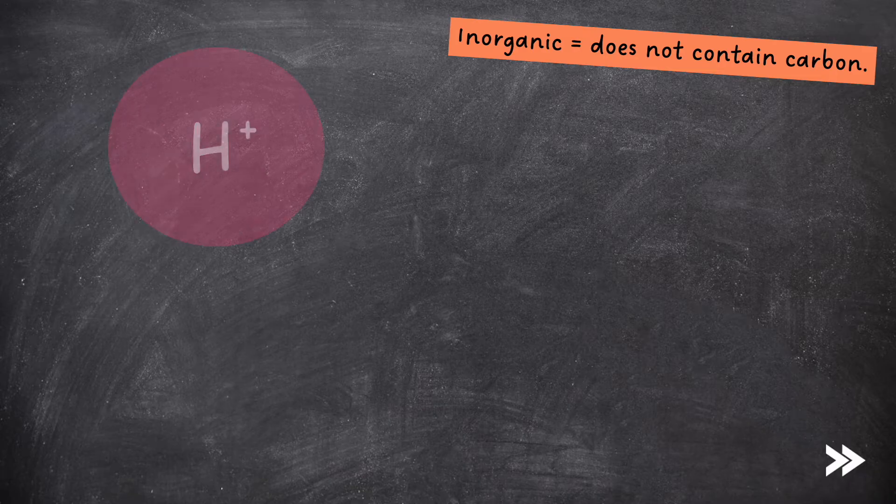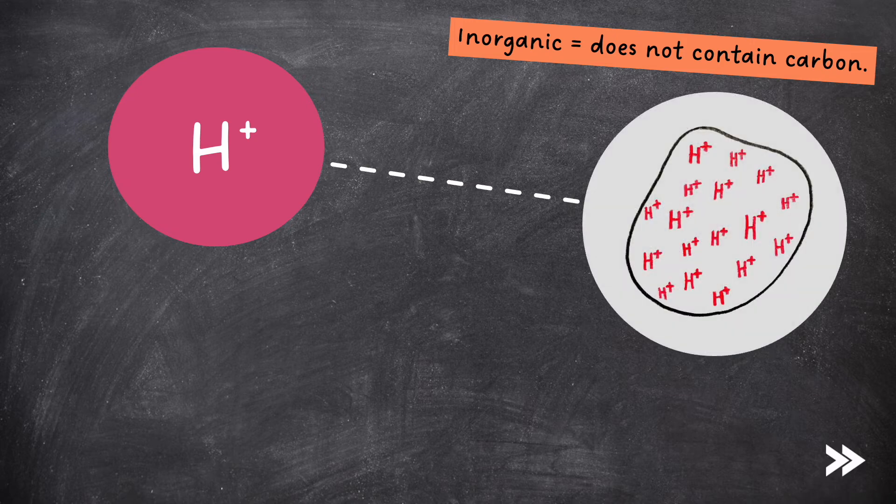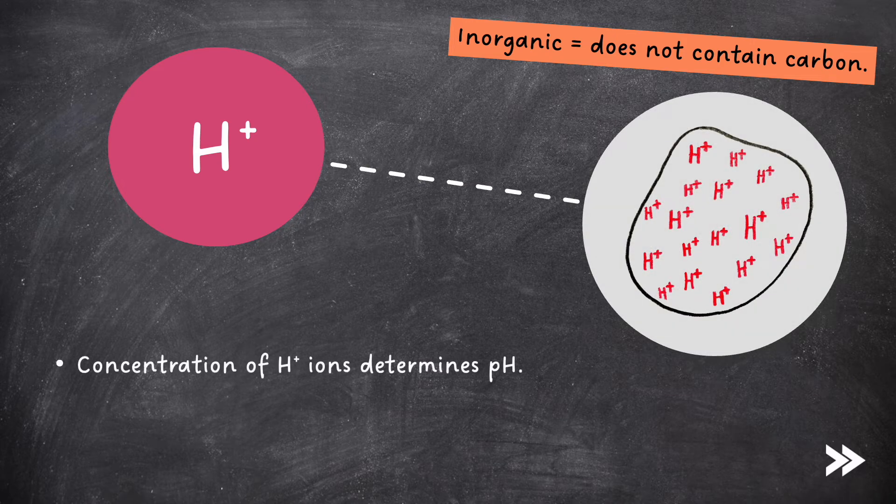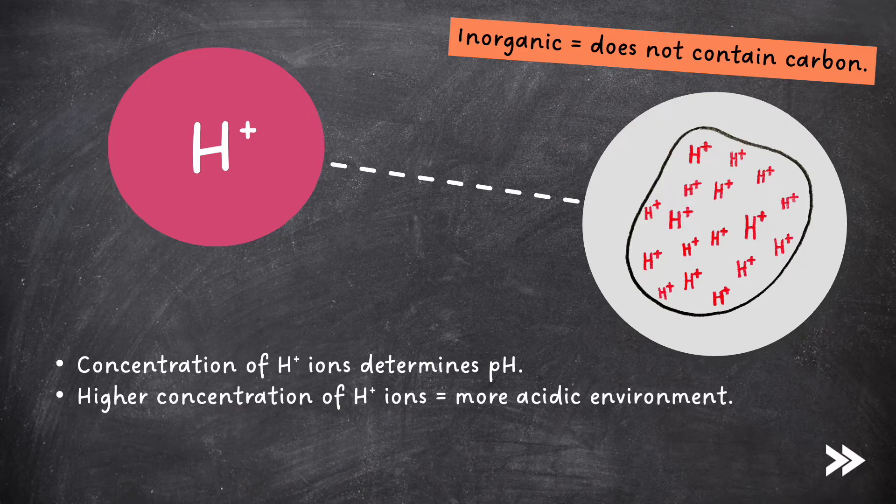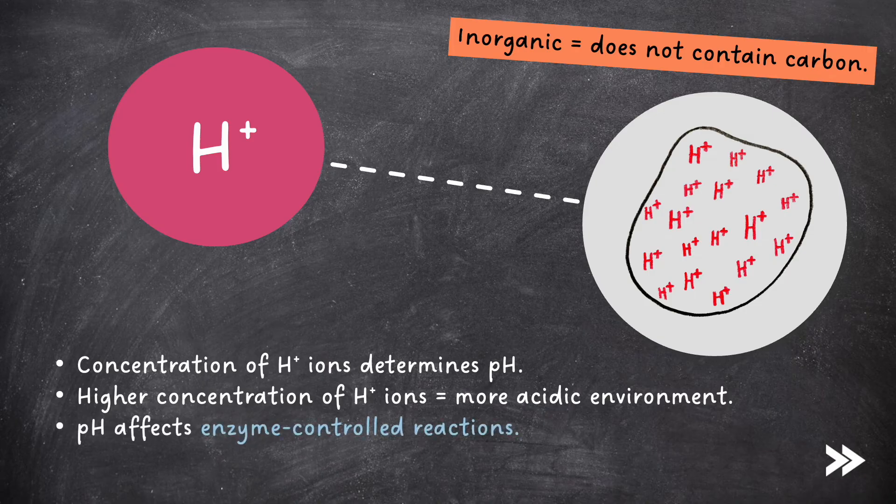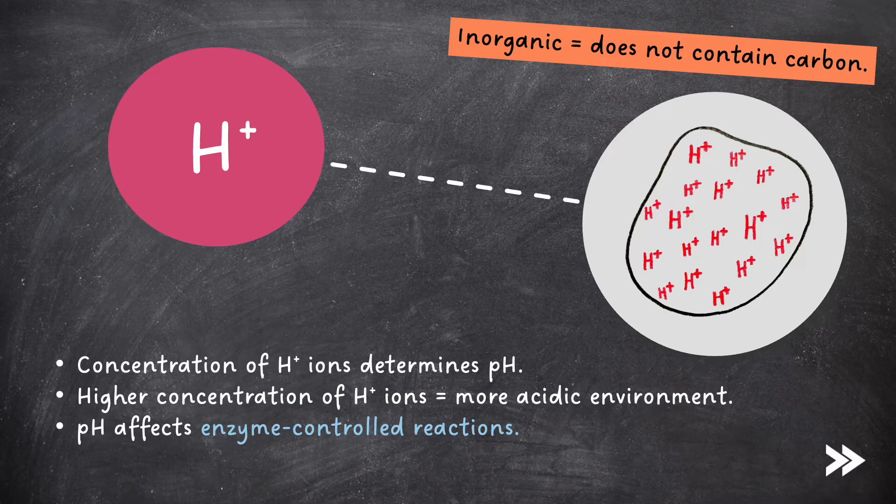First of all, we have hydrogen ions, also known as protons. The concentration of hydrogen ions determines pH. The higher the concentration of hydrogen ions, the more acidic the environment, and pH is important because it affects enzyme-controlled reactions. To recap the effect of pH on enzymes, just follow the link to my video on enzymes top right.